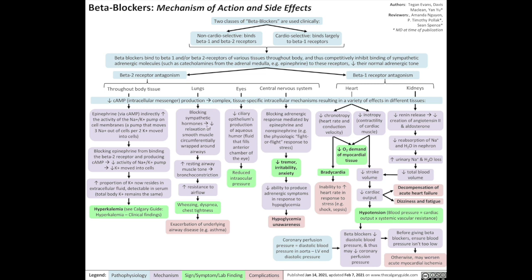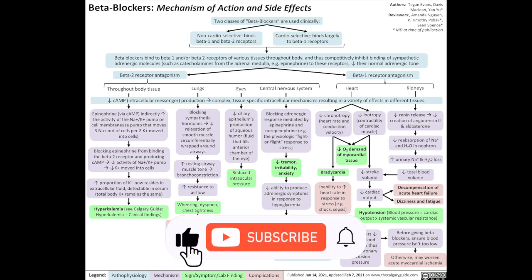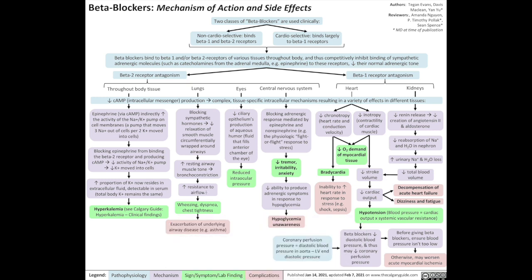In the lungs, blocking sympathetic hormones reduces the relaxation of smooth muscle circumferentially wrapped around the airways. This increases the resting airway muscle tone, which leads to bronchial constriction and increased resistance to airflow, which in turn causes wheezing, dyspnea, and chest tightness, and may exacerbate underlying airway diseases such as asthma.